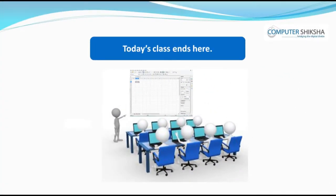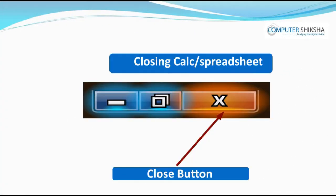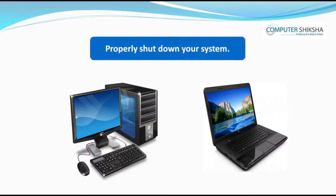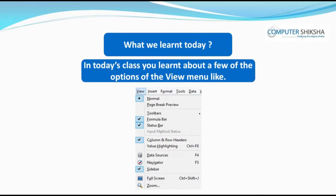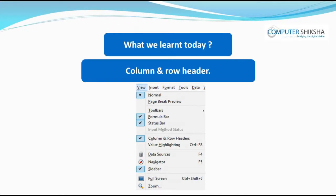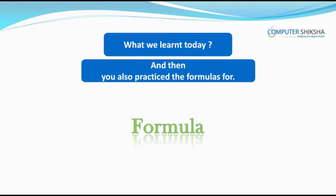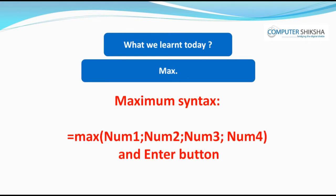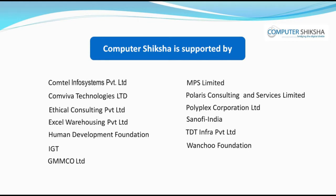Since we will be ending today's class here, all of you close your file and properly shut down your computer. In today's class, you practised the use of some of the options of the View menu like Normal, Page Break Preview, Toolbar, Column and Row Header, and Zoom, and you also practised the formulas for sum, average, maximum and minimum. Computer Shiksha is supported by. Thank you.